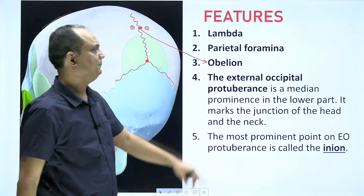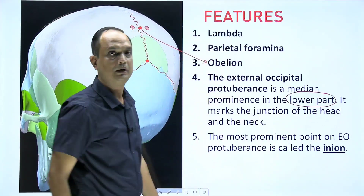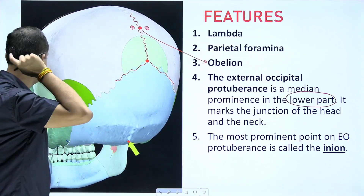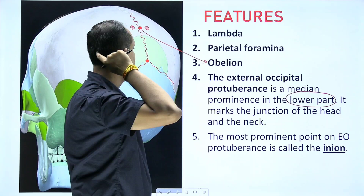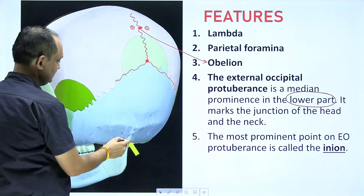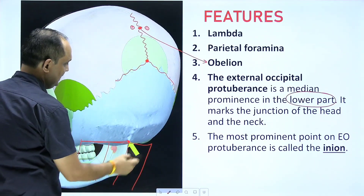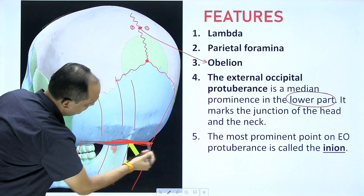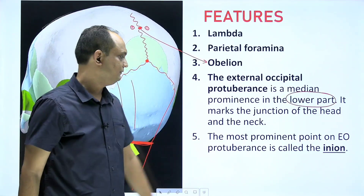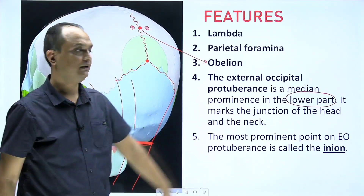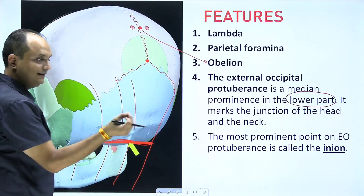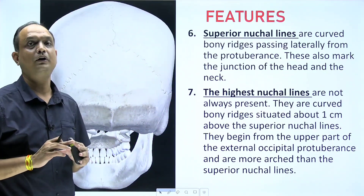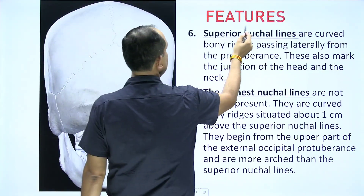The external occipital protuberance is a lower prominence in the midline. When you see the midline in the lower part, you will find this prominence, which marks the junction of the neck — below it is the neck, above it is the head. The most prominent point of the external occipital protuberance is known as inion.